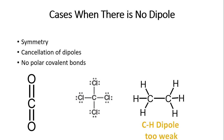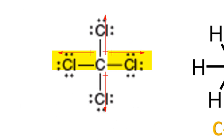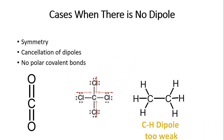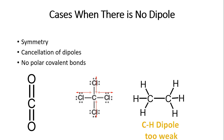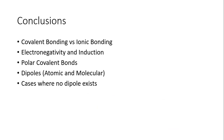There are also cases where there is no dipole. If a molecule is symmetrical, like CO2, there is no net dipole. In carbon tetrachloride (CCl4), the dipoles cancel because they have equal magnitude but point in opposite directions. Another case is when there are no significant polar covalent bonds — C–H bonds around carbon are weakly polarized toward carbon, but the individual dipoles are too weak to produce an overall net dipole moment.